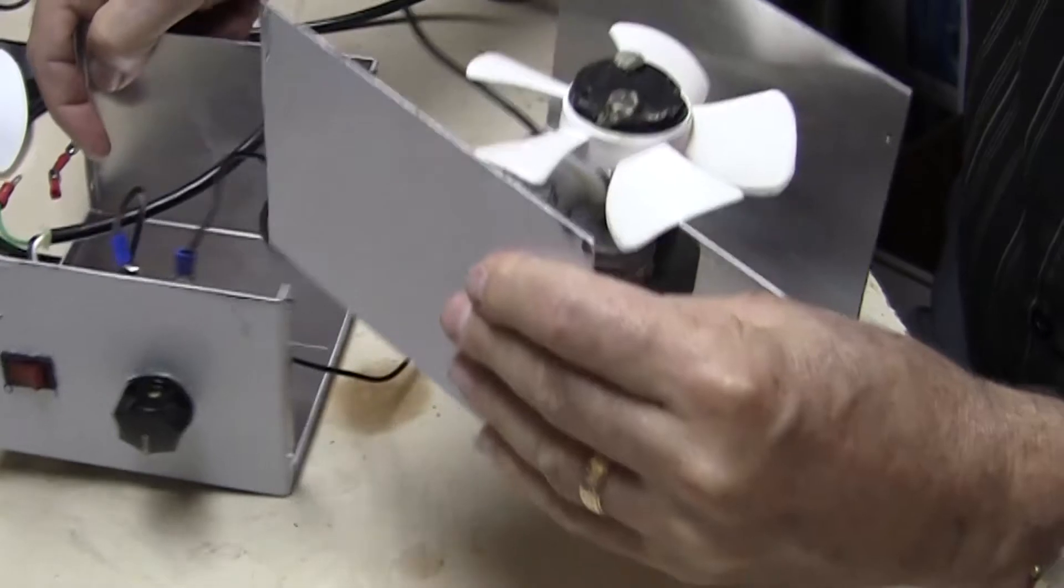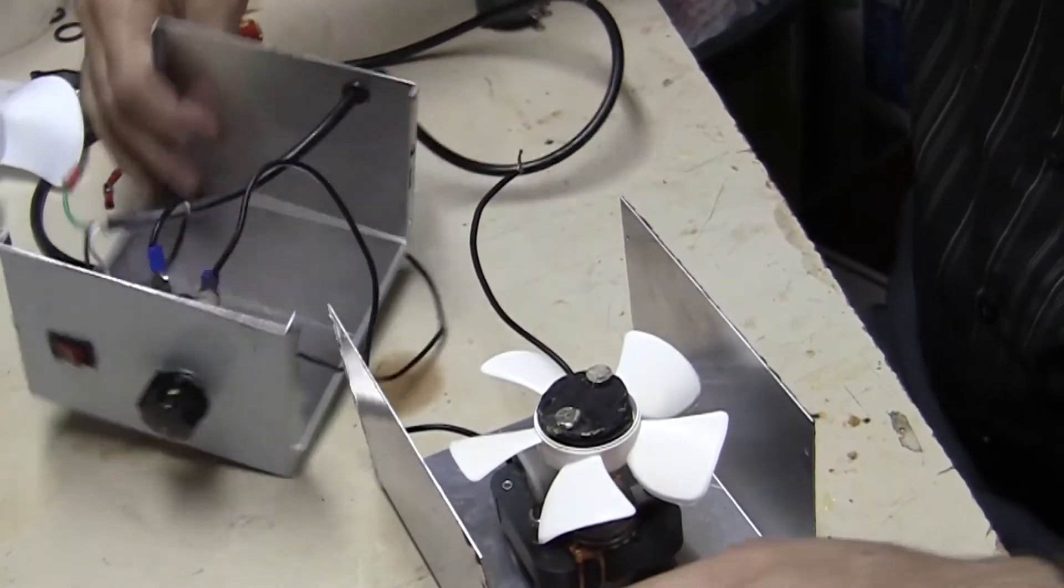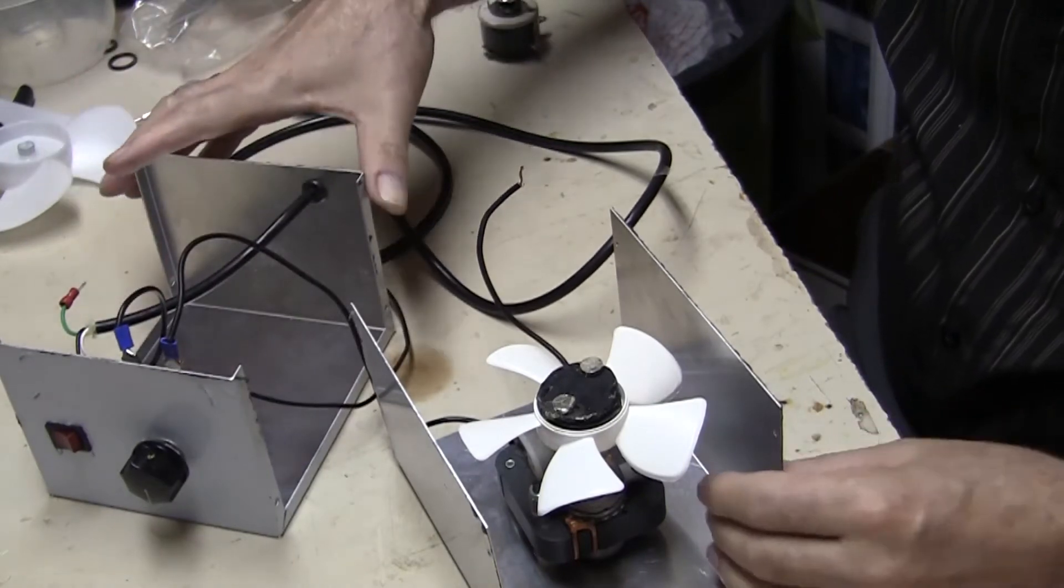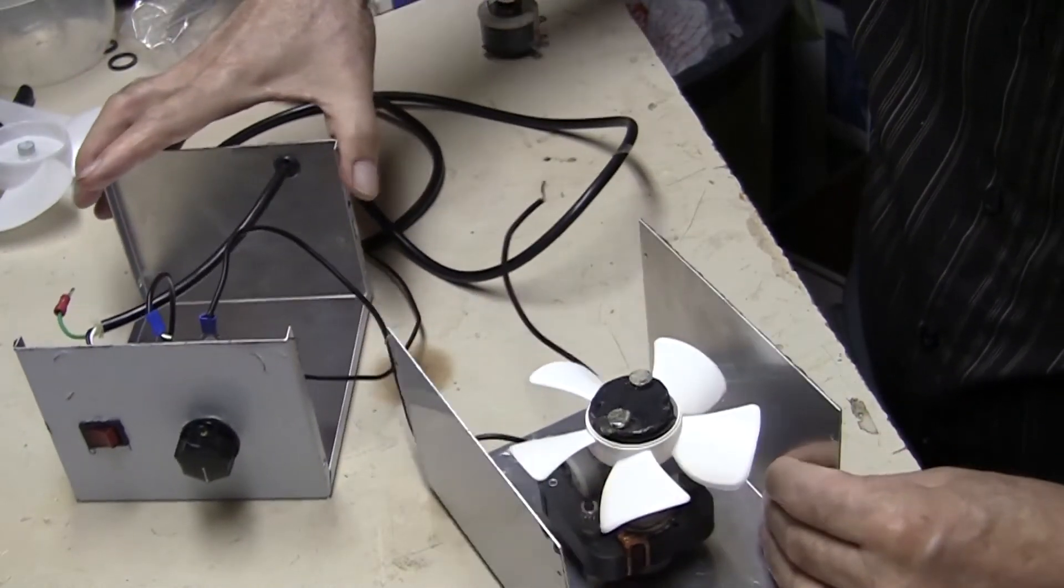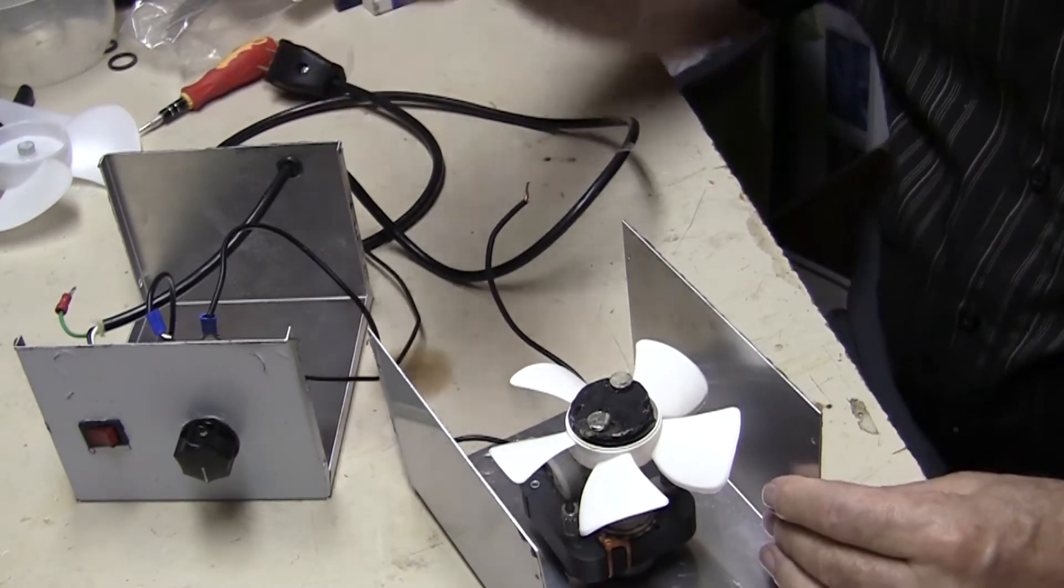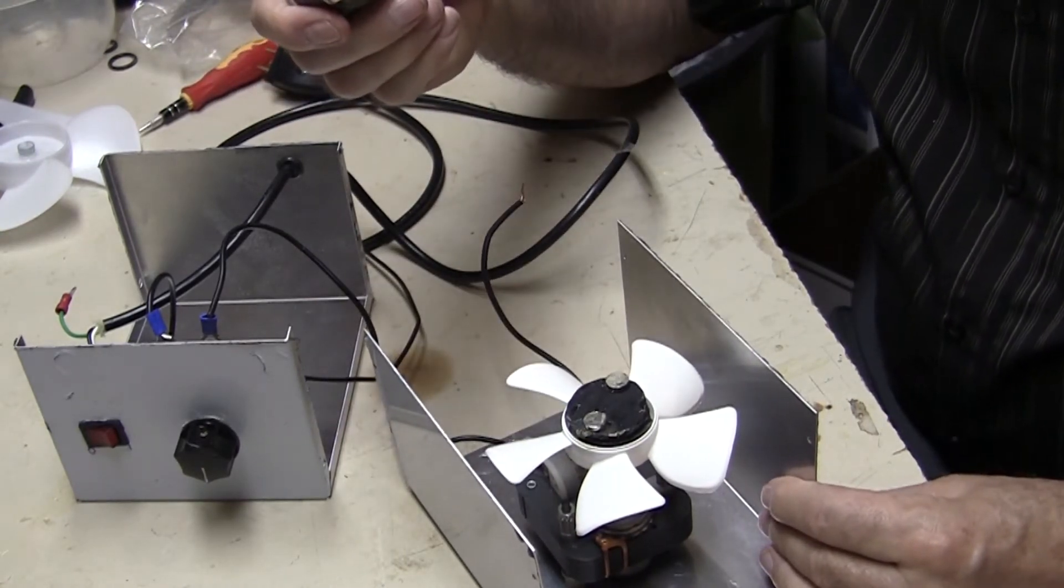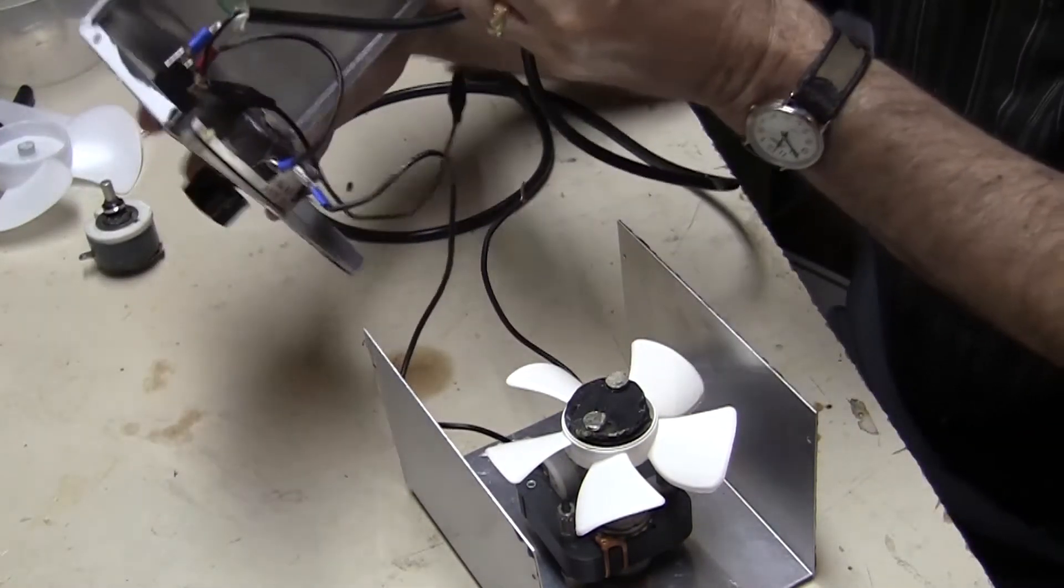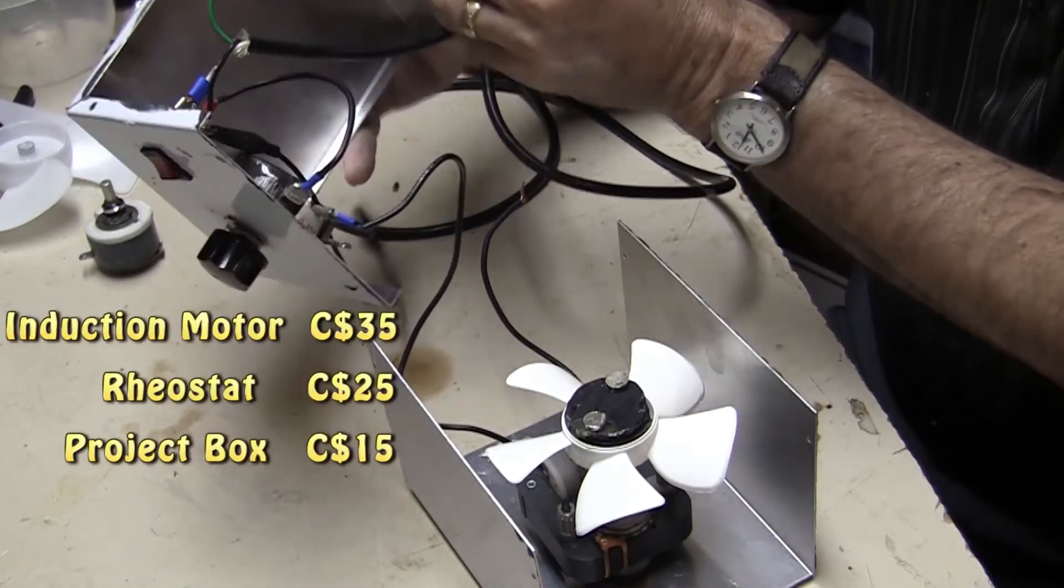Now the housing, then, this aluminum housing is, as you saw at the beginning, is called a project box. Now the rheostat that you need, I think was about $20 to $25. So I've already got it installed here. Let me pause here for a moment just to show the costs of the major parts.